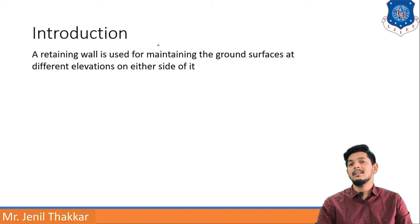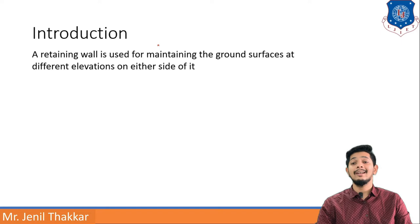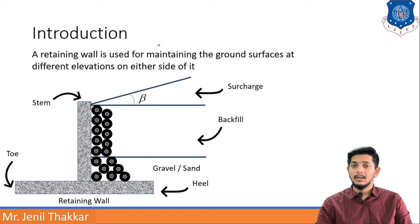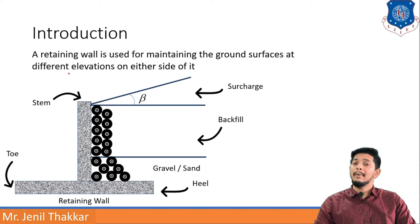Let us start with an introduction of earth pressure, and then we will go to different theories. A retaining wall is used for maintaining the ground surfaces at different elevations on either side of it, as you can see in the picture. Retaining walls are generally used to maintain both sides at different levels.